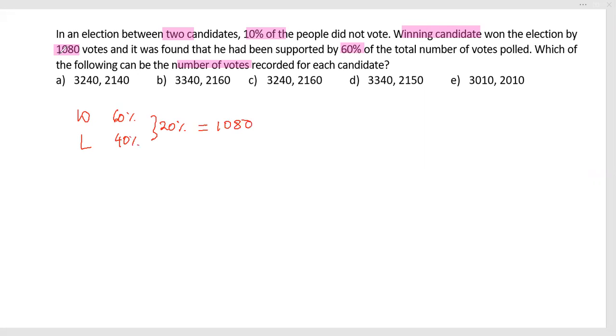Because it's mentioned that 1080 is the gap, 3 times 1080 would be the winner and 2 times would be the loser. So if I get these two, I'll be able to get the winner and loser information. The winner will be 3 times 1080.